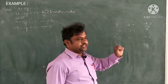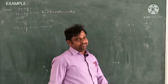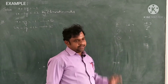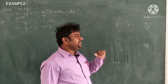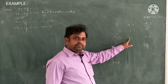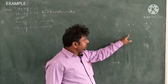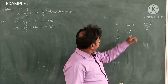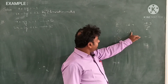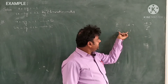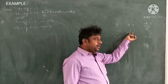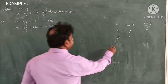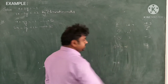First, we should make them equal. Either x coefficients or y coefficients can be made equal — it is easy. Here, the y coefficient in equation 1 is 2, and if we multiply equation 1 by 2, the x coefficient can be changed to 2. So, we should multiply equation 1 by 2 to make both x coefficients equal.